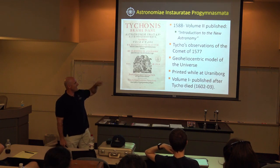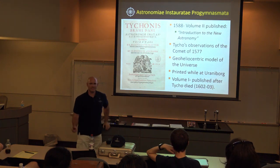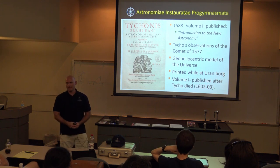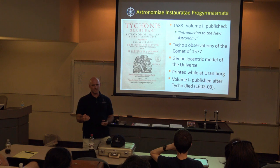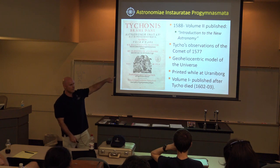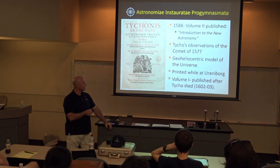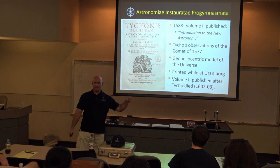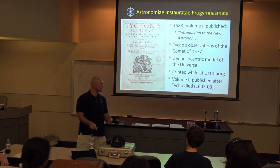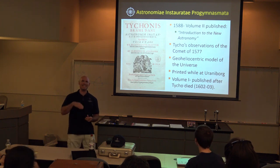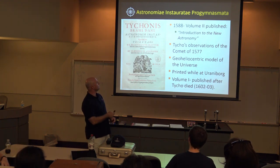In 1588, while at Uraniborg, Tycho published the second volume of a three-volume book — essentially titled 'Introduction to the New Astronomy.' Volume one was incomplete and not published until after his death in the early 17th century; volume two was published while he was alive; volume three was never published. Volume three included Tycho's observations of the great comet of 1577 as well as details of his geo-heliocentric model of the universe.